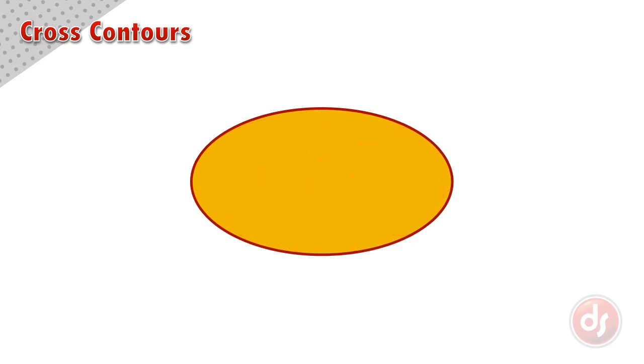We can do this again but make the object face the other direction by changing the position of the cross contours. By curving the side cross contours up and defining the bottom plane shows us we are looking up at the object.